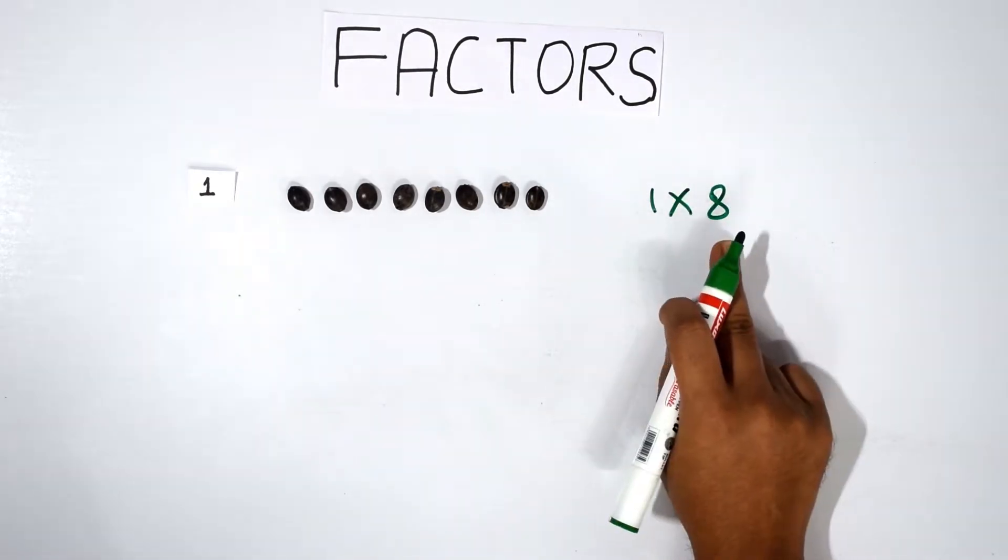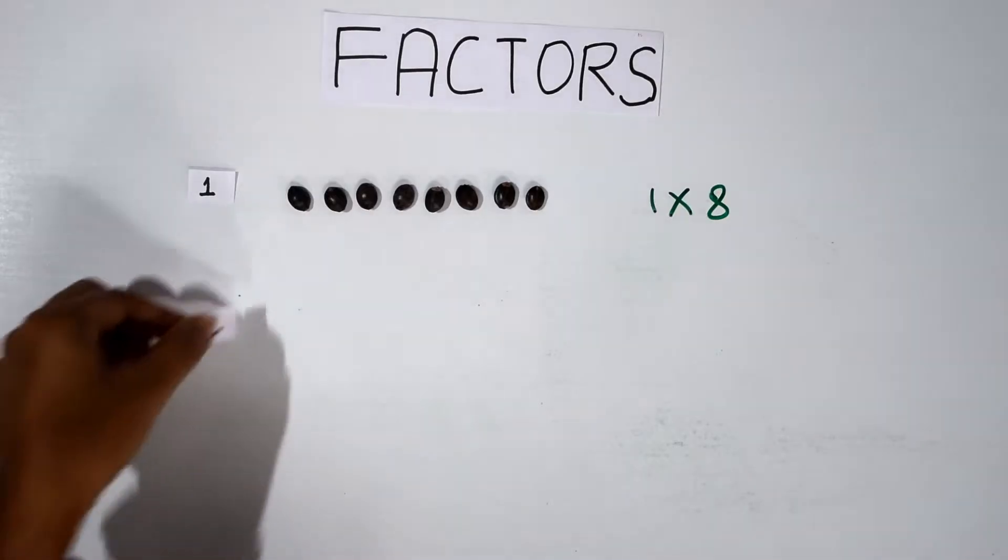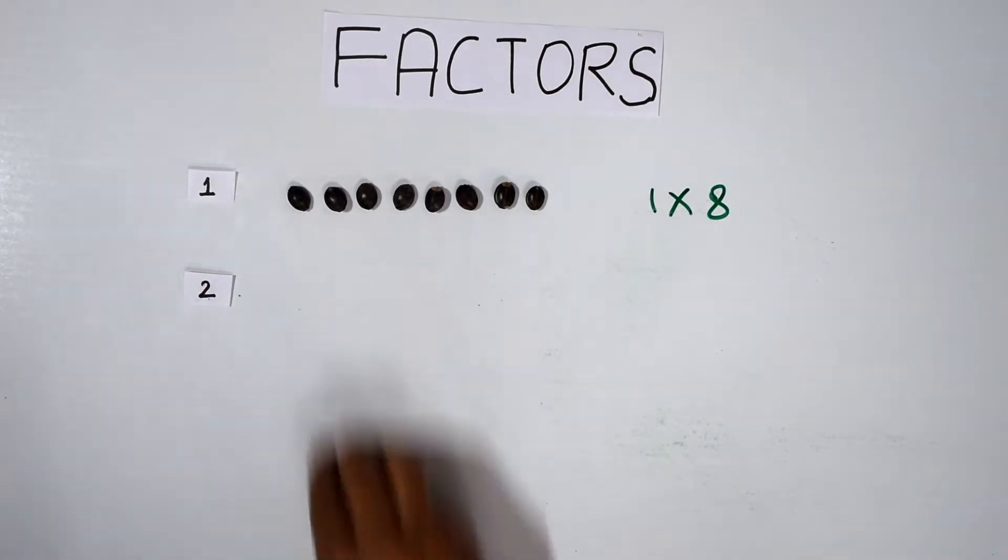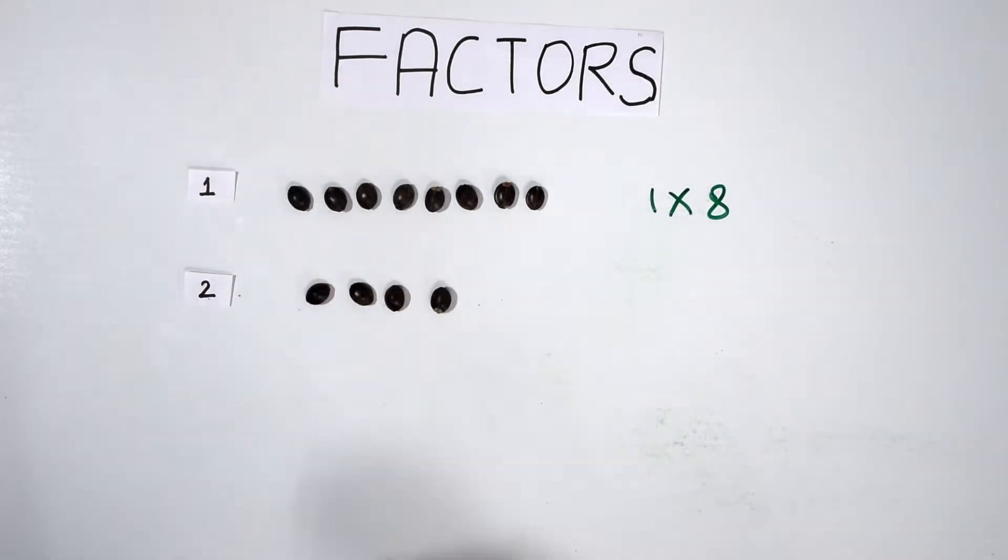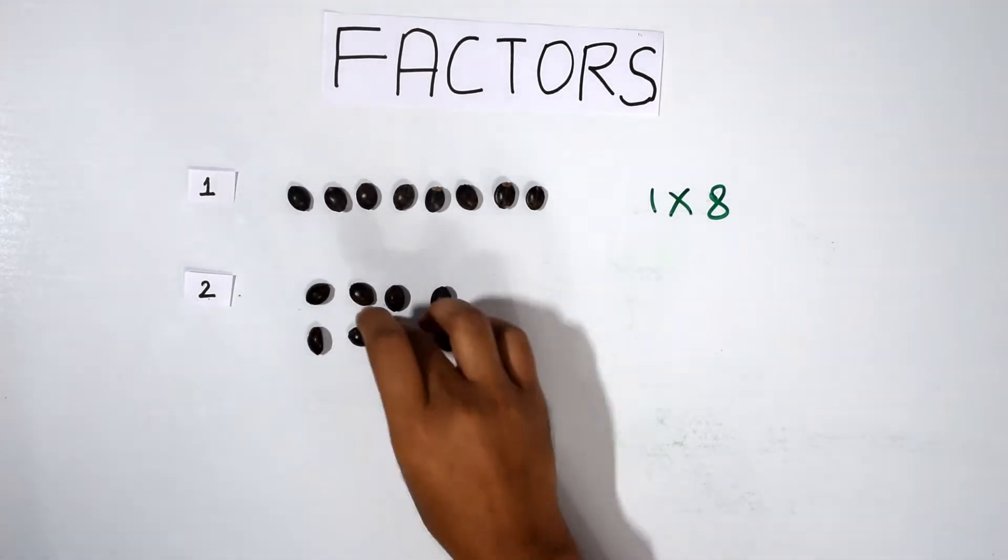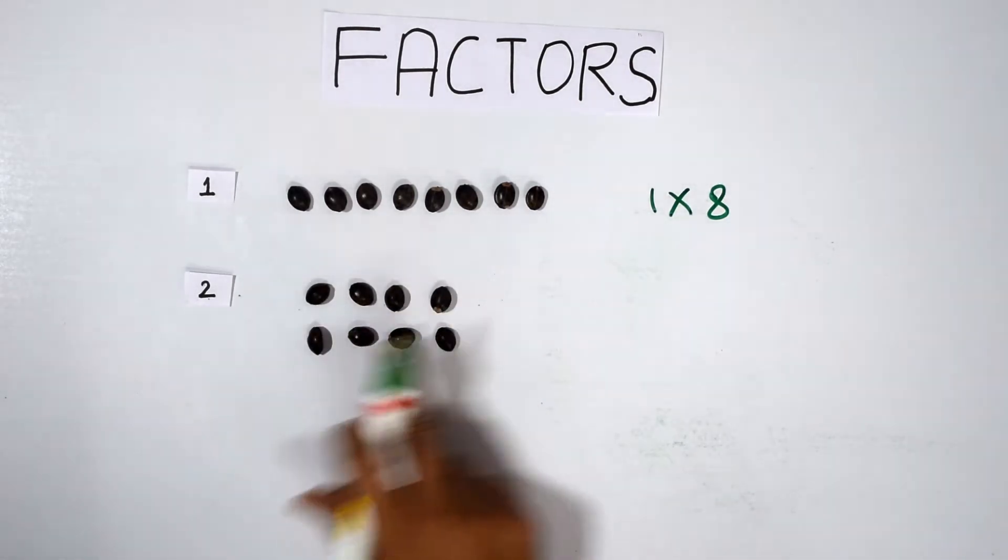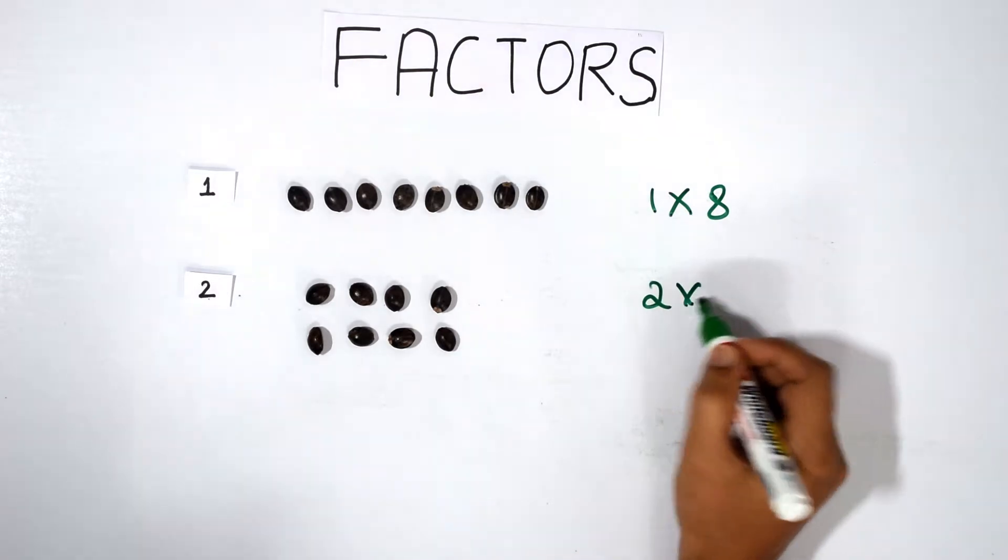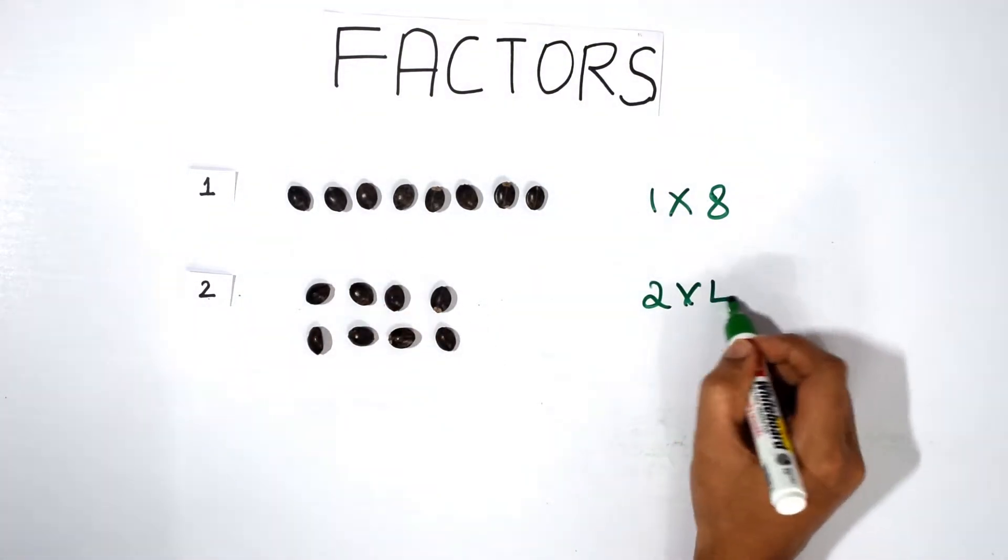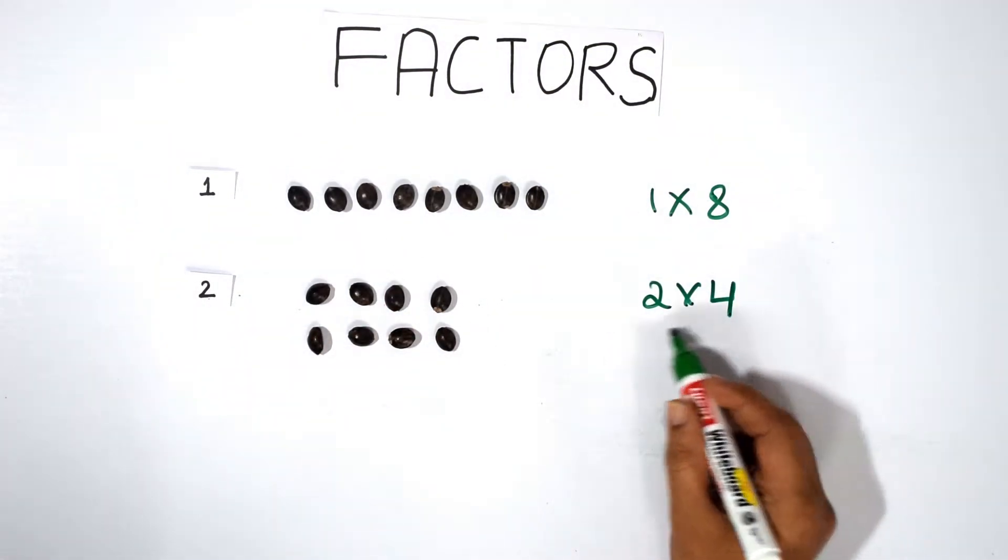In the second case, she arranges them in this way. This has two rows and one, two, three, four columns, so it can be written as two times four.